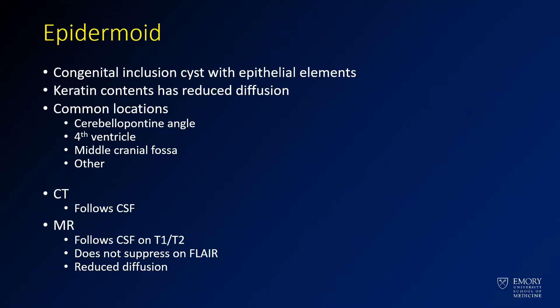As was suggested by that prior question, this is a case of epidermoid. Epidermoids are inclusion cysts that have epithelial elements. Because of that, you have keratin components that have reduced diffusion. The most common intracranial location is the cerebellopontine angles, as seen in this case. They can also occur in the fourth ventricle, the middle cranial fossa, or elsewhere. The classic description on imaging is that the lesion has a dirty CSF appearance.